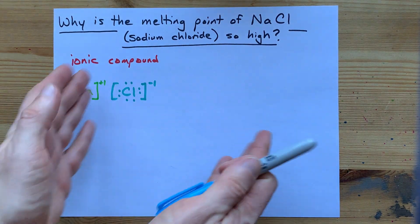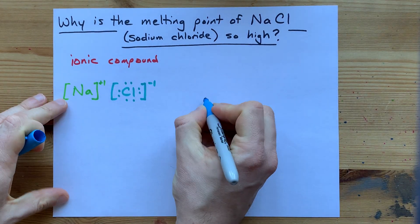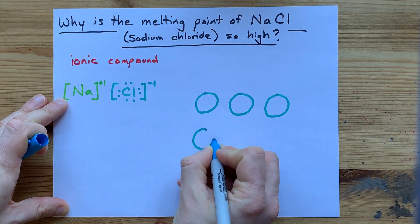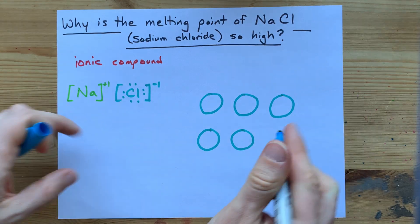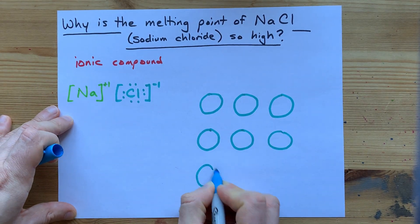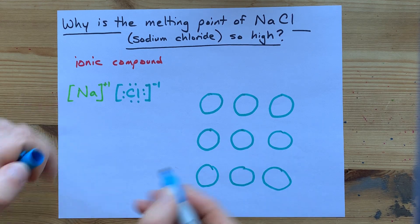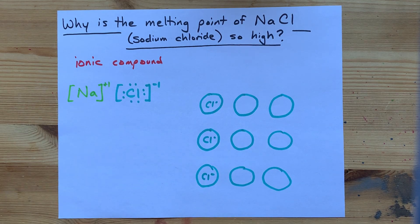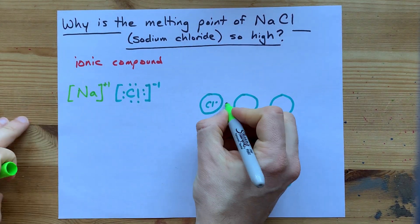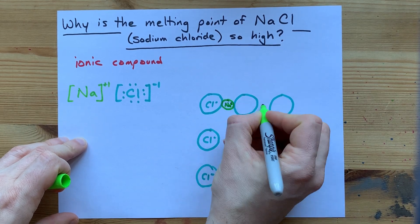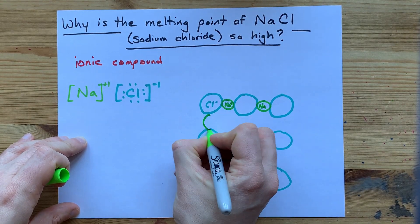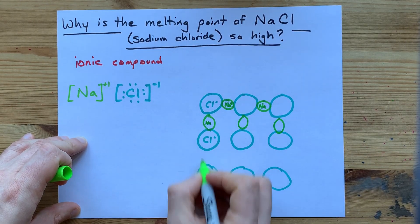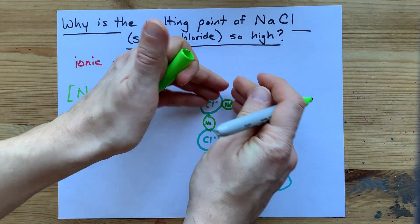The way that sodium chloride is actually arranged — and this is three-dimensional — is that the chlorines alternate both horizontally, vertically, and depth-wise with sodiums. Here's me drawing a bunch of chloride anions. The sodiums, which are smaller, are in between them. This is happening both horizontally and vertically, up-down, and in a third dimension.